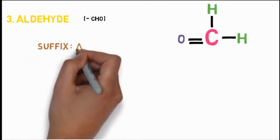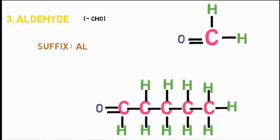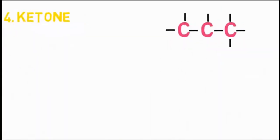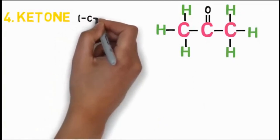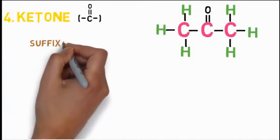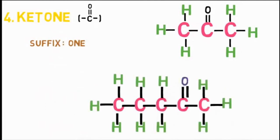For example, pentane with OH attached at position 3: write pentane and add '3-ol' to its right. Remember, two vowels do not come together so remove the 'e' of pentane — it is pentan-3-ol. If a terminal hydrogen is replaced with an oxygen atom, those are called aldehyde functional groups. Their naming includes suffix '-al'. For example, pentane with oxygen at position 1: remove the 'e' of pentane and add '1-al' — it is pentan-1-al.